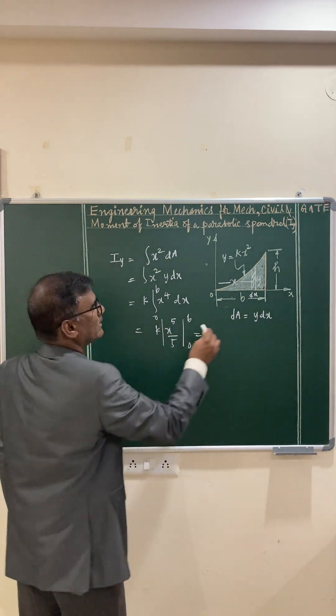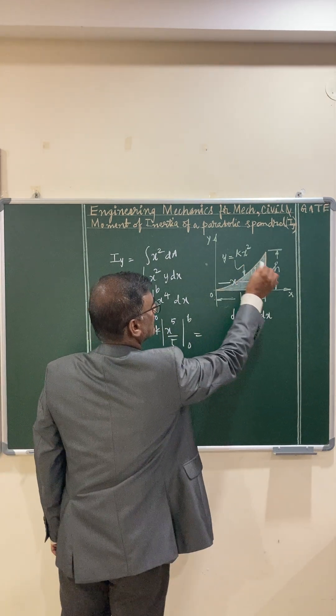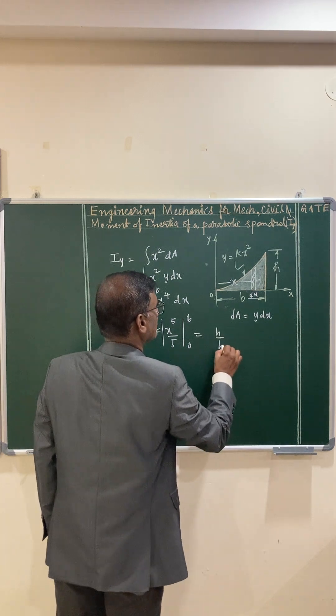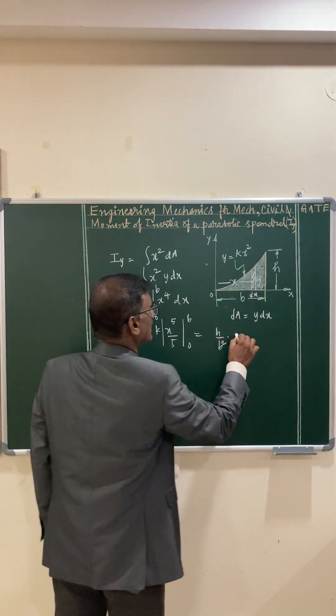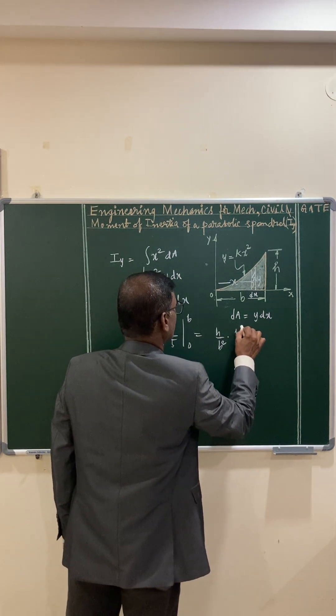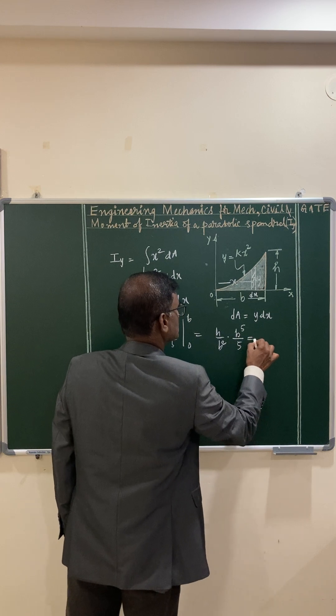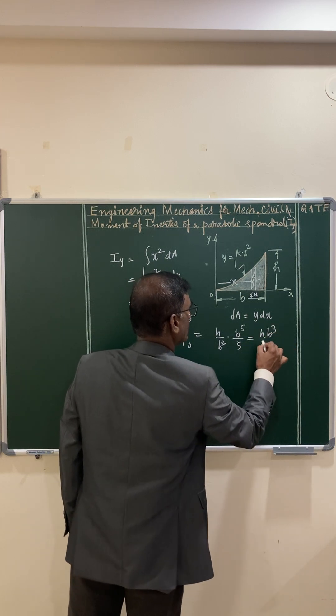If you substitute k value, k value is y by x square, that is h by b square, and it is b to the power 5 by 5. This becomes h b cube by 5.